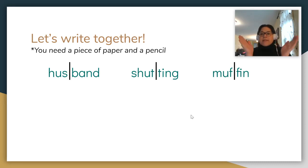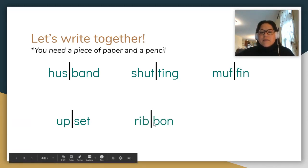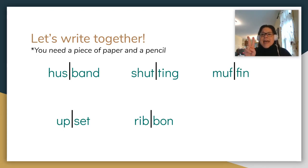Next one: 'upset.' U-p-s-et — check your work. Good. Next word — 'ribbon.' Ribbon. This one's a harder one like husband. The first syllable's easy — but you need an O there. And the last word: 'sudden.' S-u-d-den — check your work. Great job.